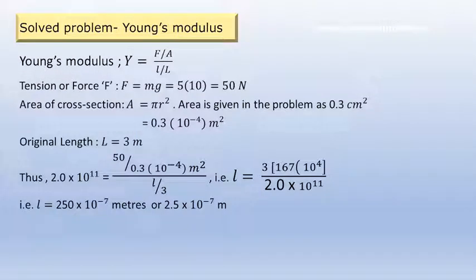So going through the equations, Y is equal to F/A by L/capital L. The tension force F is equal to mg. 5 kg mass into g which is 10, so that's 50 Newton force. The area of cross-section is πr², but here we have the area given as 0.3 cm². We convert it into m², so that becomes 0.3 × 10⁻⁴ m². The original length capital L is given as 3 meters.